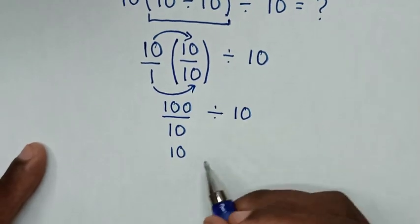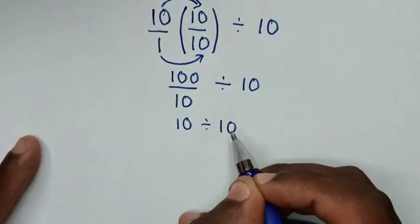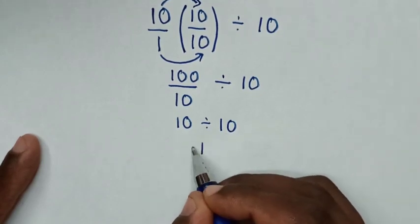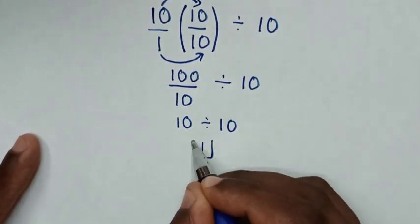Then divide by 10. So 10 divided by 10 is 1. This is our final answer.